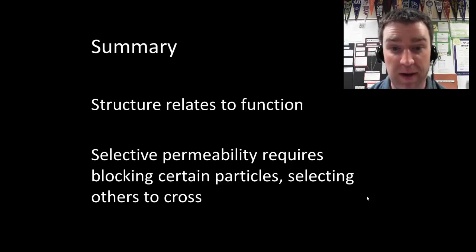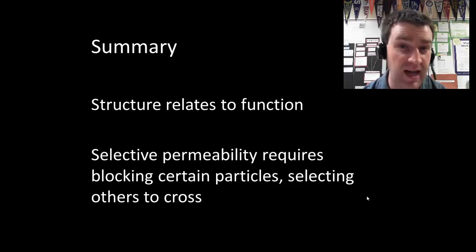I hope I've been able to communicate the broad idea of selective permeability and how a membrane is made of two basic components. Both of those components have a particular structure that contributes to the overall function of selective permeability. You should be able to tell me what blocks and how it blocks. You should be able to tell me what selects and how it selects.